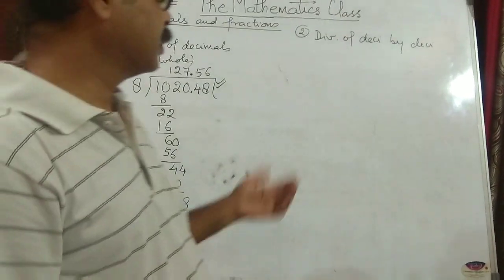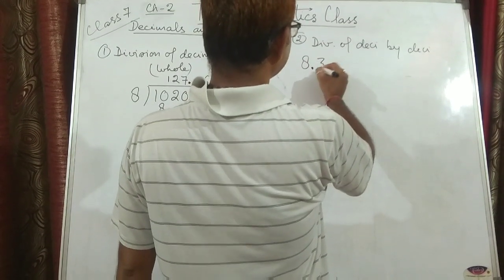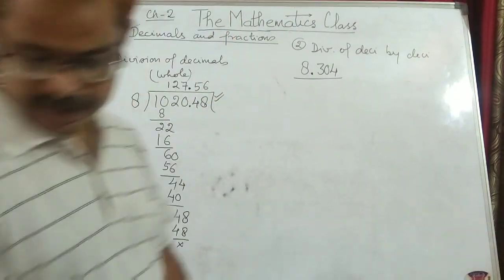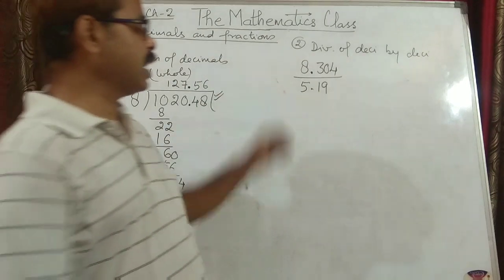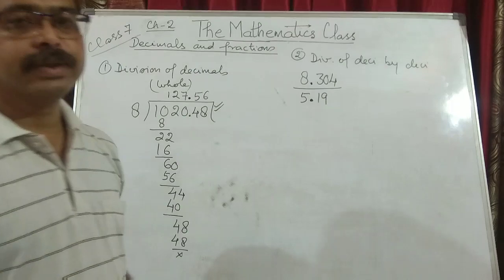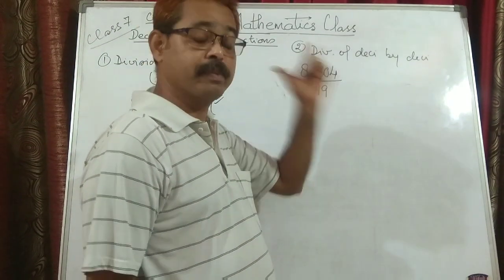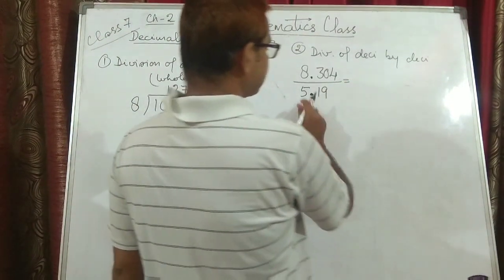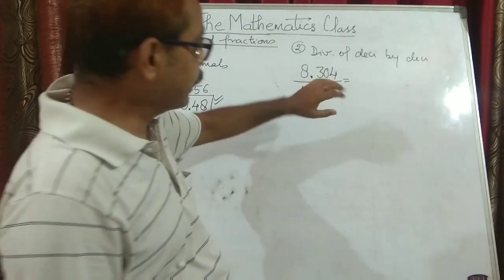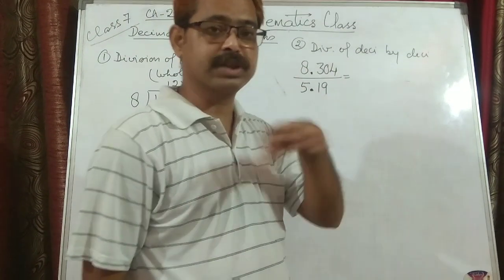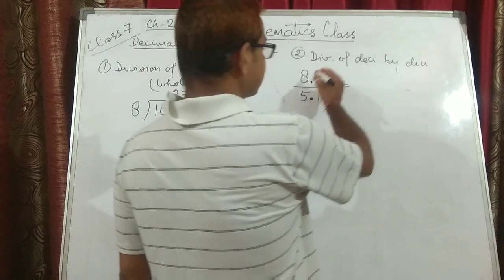Now let us say we have to divide a decimal by a decimal. Let us take 8.304 divided by 5.19. What we do in this case? If you have a question where the denominator is also a decimal, we generally multiply the denominator by powers of 10 to make the denominator a whole number.